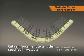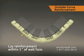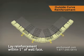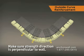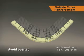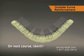On the next course of blocks, cut reinforcement to the length specified in the wall plan. Lay sections of reinforcement within one inch of the face of the wall, making sure the strength direction of each section is perpendicular to the wall face. Avoid overlapping.